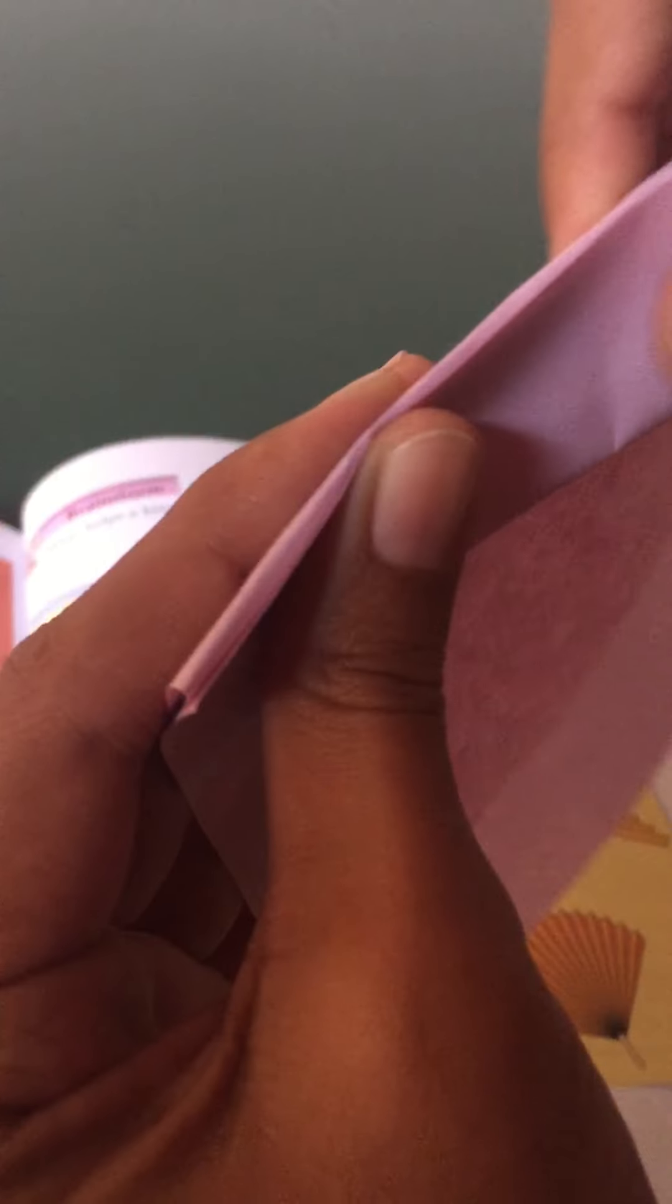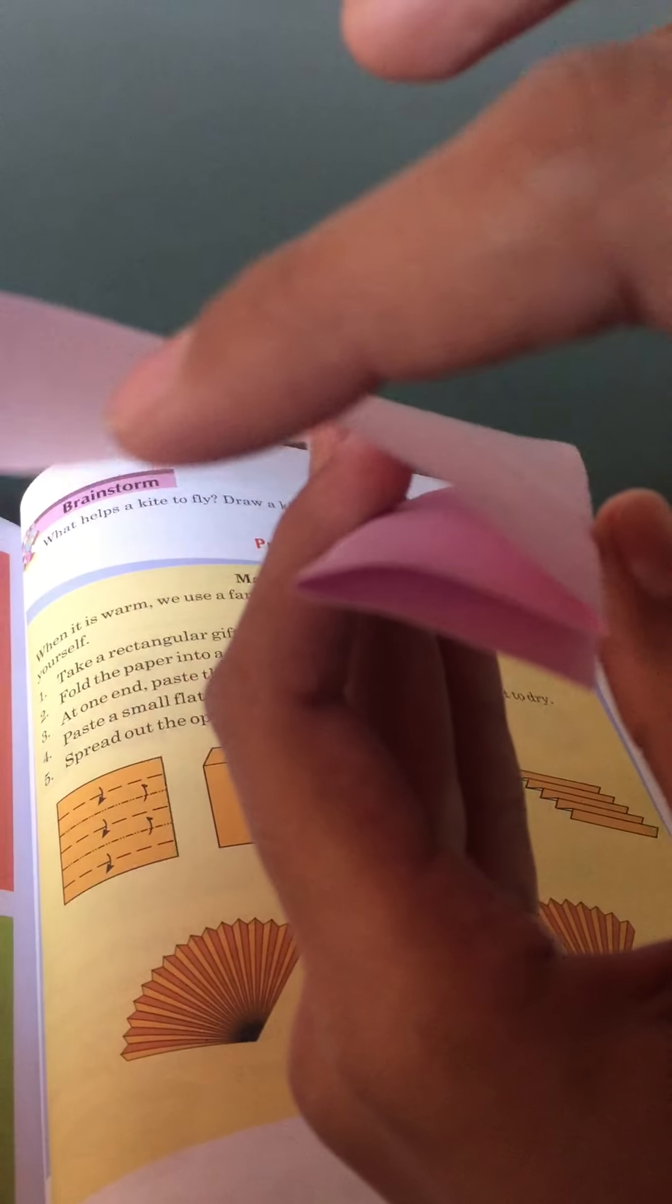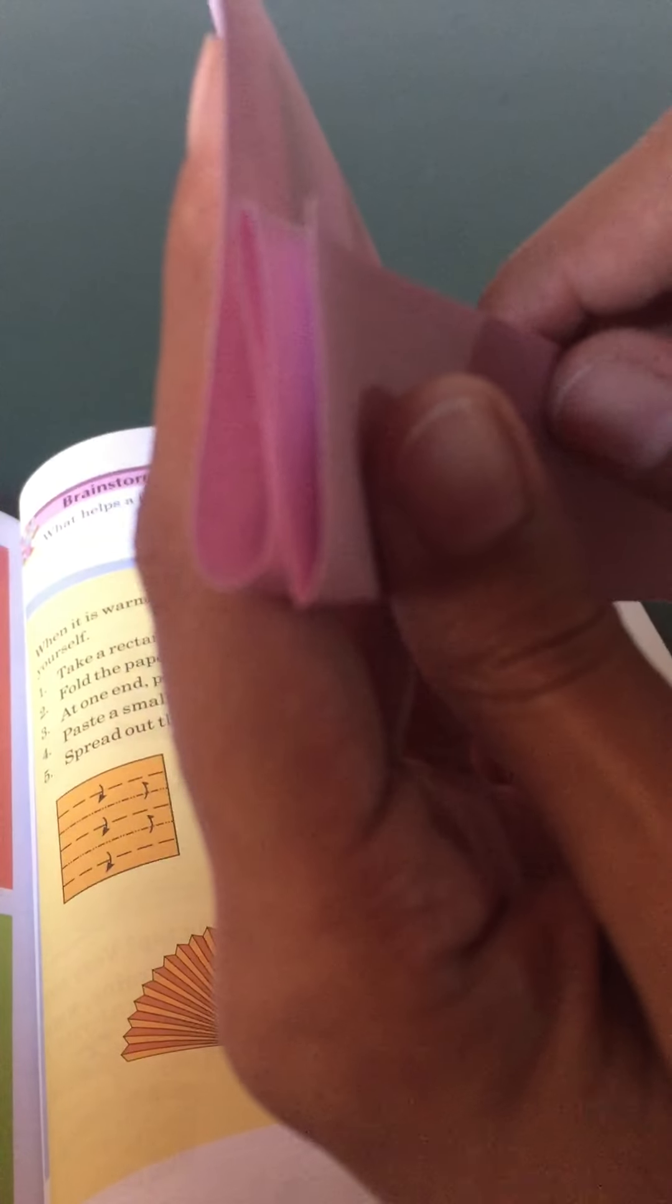Next, again you will do this side up of the paper and you will fold it again in this way. Understanding all of you? Very good. In this way you will do folding again.